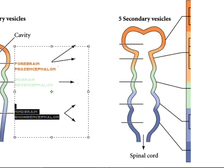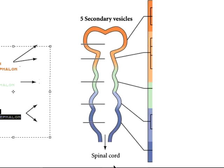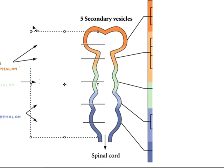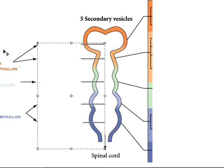Right now if you go over here, those three primary vesicles then turn into five secondary vesicles, and this is how it goes. The forebrain, the prosencephalon, then turns into the telencephalon and the diencephalon. The mesencephalon just stays as the mesencephalon. And then the rhombencephalon turns into the metencephalon and the myencephalon.